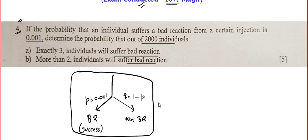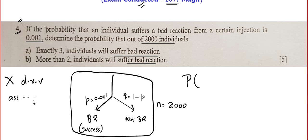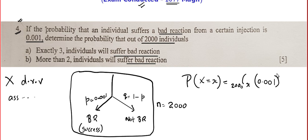The same experiment is repeated again and again. They took a sample of 2000 people, so I am 100% sure this problem can be solved with binomial distribution. Let X be the discrete random variable associated with the number of people who end up with bad reaction after taking the injection. Then P(X=x) = 2000Cx × (0.001)^x × (1−0.001)^(2000−x).